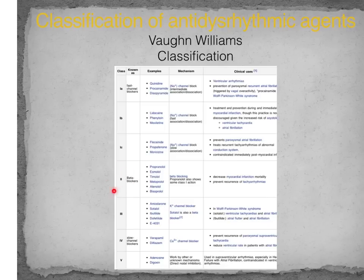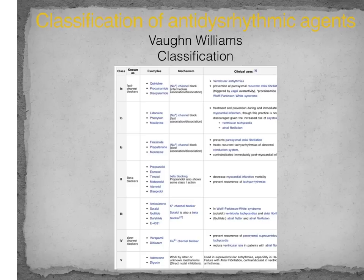Class 2 agents, instead of blocking an ion channel, block an adrenergic receptor — specifically beta receptors, either beta 1 or beta 2. Some of these beta blockers are non-selective in that they block all beta receptors, while others are more selective and only block beta 1 receptors. We'll talk about why that differentiation matters.